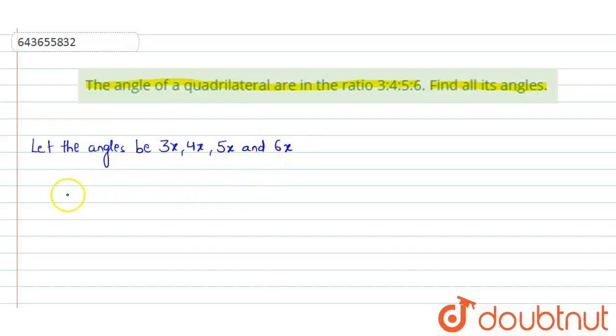We know that according to the angle sum property of a quadrilateral, the sum of all interior angles equals 360 degrees.